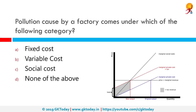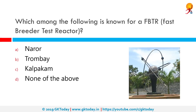Pollution caused by a factory comes under which category? It comes under social cost. In neoclassical economics, social cost is the sum of the private cost resulting from a transaction and the costs imposed on consumers as a consequence of being exposed to the transaction, for which they are not compensated. For example, if a factory pollutes a nearby lake, people buying the factory's products paid for those products but are not compensated for the harm caused by the pollution — making it a social cost.